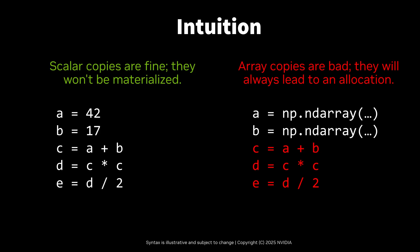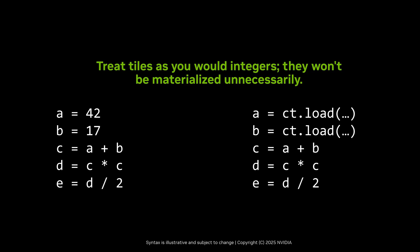It's a little unnerving to think of tile arrays as values. Typically, our intuition is that it's fine to make copies and temporaries of scalars like ints, because they're cheap to copy and they won't always be materialized. But array copies should be avoided. They're expensive, and they'll always lead to an allocation and materialization. But tile arrays are different. Treat tiles as you would ints. They're cheap to copy and won't be materialized unnecessarily. Imagine an architecture where all the instructions are array operations, and all the operands and registers are arrays. That's the tile programming model.